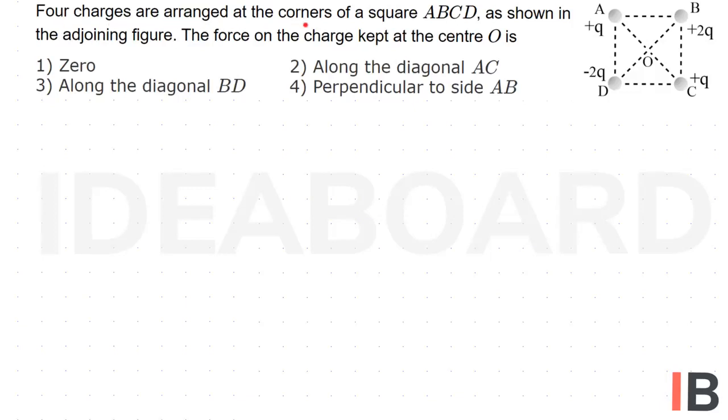Four charges are arranged at the corners of a square ABCD as shown in the adjoining figure. The force on the charge kept at the center is. Now in the given case, this is a square ABCD.